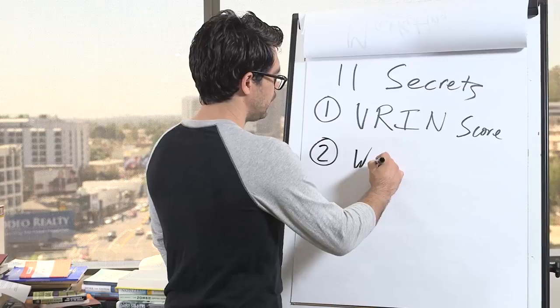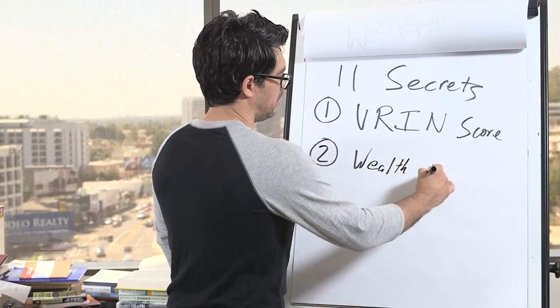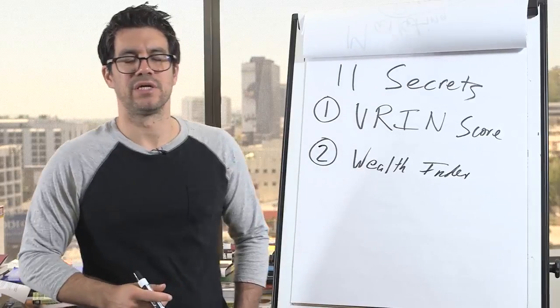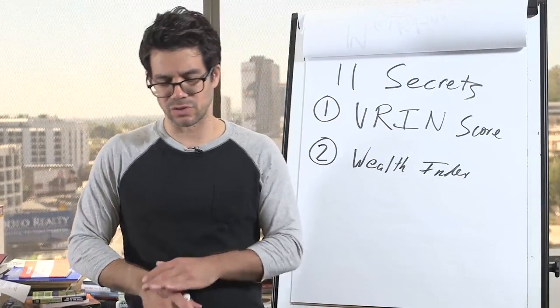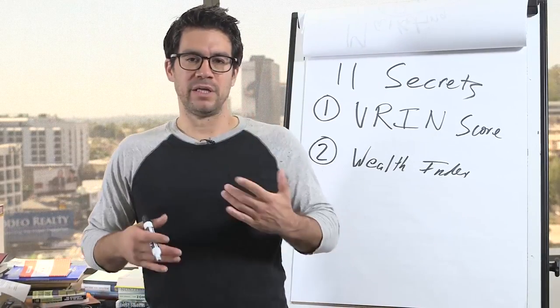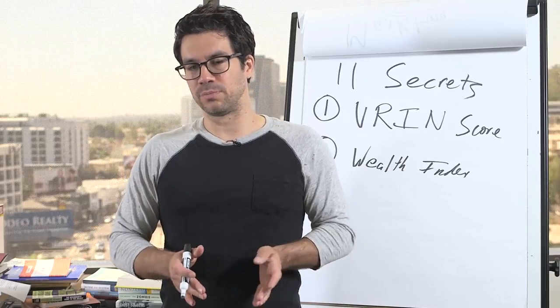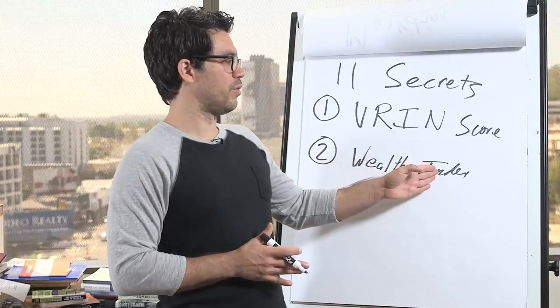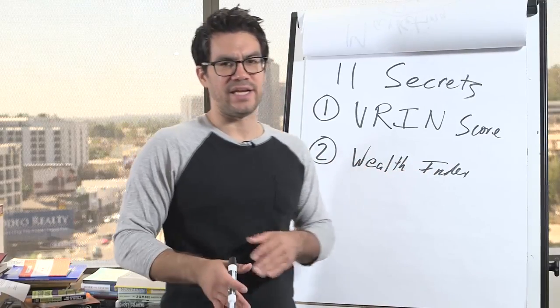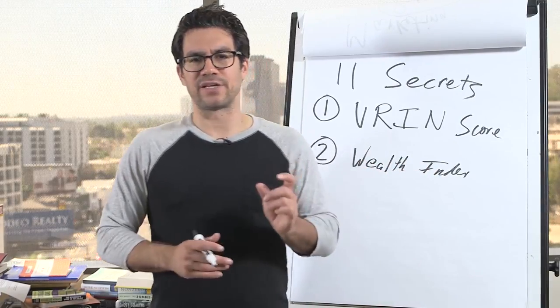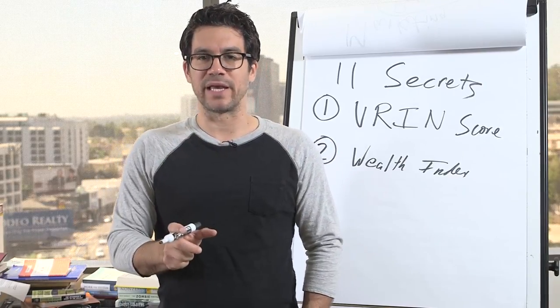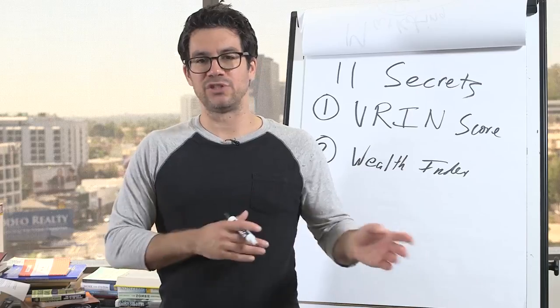Number two, there's a wealth index. A guy did a very famous study and wrote a book called The Millionaire Next Door, where he studied self-made millionaires across the United States. And his conclusion was that you can look at people's wealth index. So you basically take your age, it's a factor of your age, your net worth, meaning how much money you have in your bank account and all the things you own minus your debts.